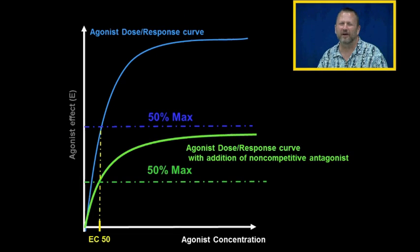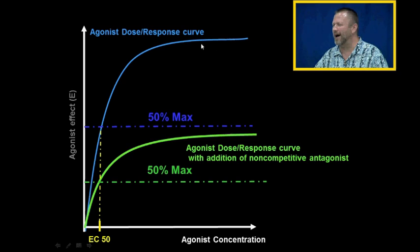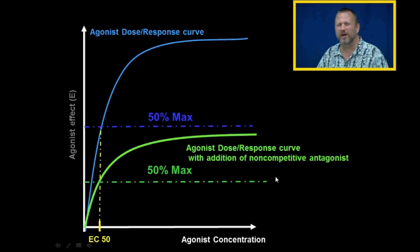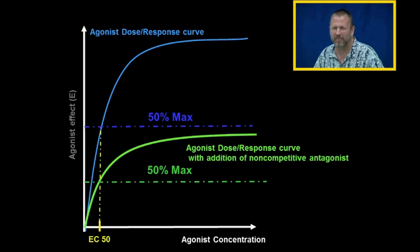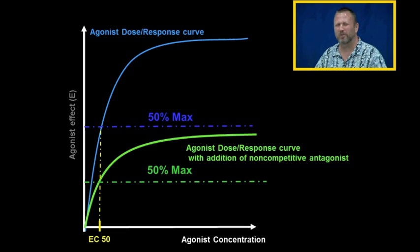The agonist dose-response curve in the presence of non-competitive antagonist looks different from the normal agonist dose-response curve. When we add non-competitive antagonist to the solution and plot the same graph, adding more and more agonist does not allow us to reach maximal effect, because the agonist cannot overcome the non-competitive antagonist.